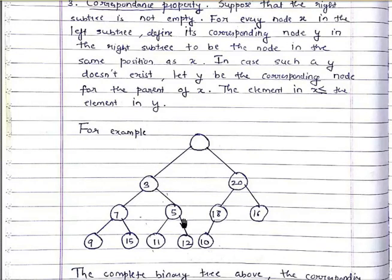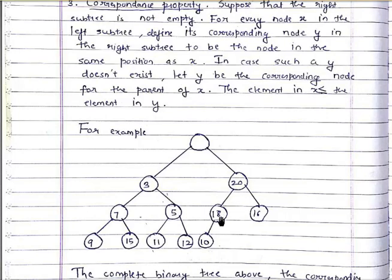For example, 3 has 20, 7 has 18, 5 has 16. Now in cases where a corresponding y doesn't exist — for example, 9 has 10, but 15 has no corresponding y — in such cases, let y be the corresponding node for the parent of x. So for 15, the parent's y will be 18, which is the y for its parent 7. Similarly for 11, the corresponding y for parent 5 will be 16, and same for 12.